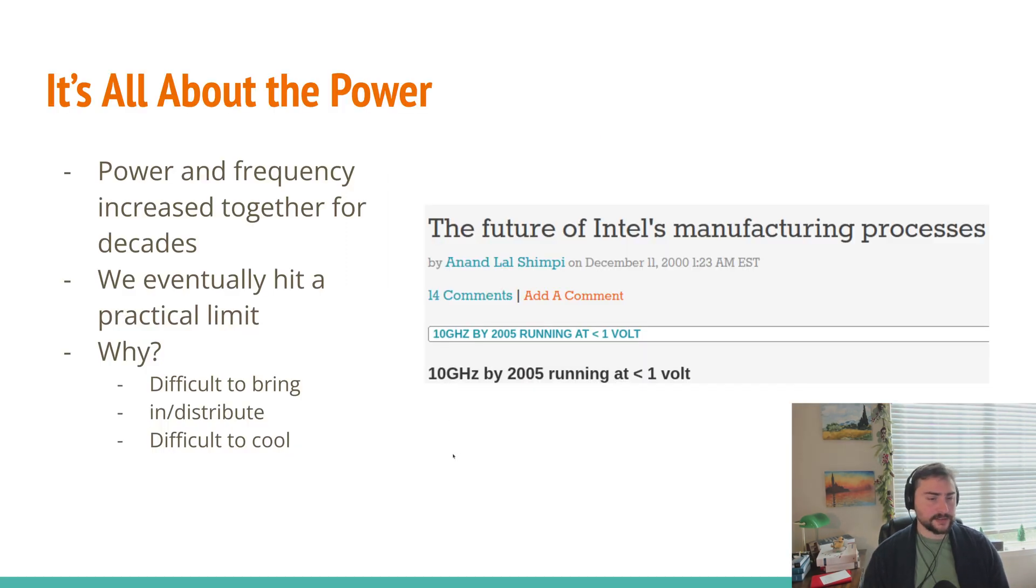This 10 gigahertz number largely comes from Intel's own technology roadmap from the very early 2000s. Here I've got this article headline from December of 2000 talking about Intel having 10 gigahertz processors by 2005 running at less than a volt. So why exactly did we not get these processors?